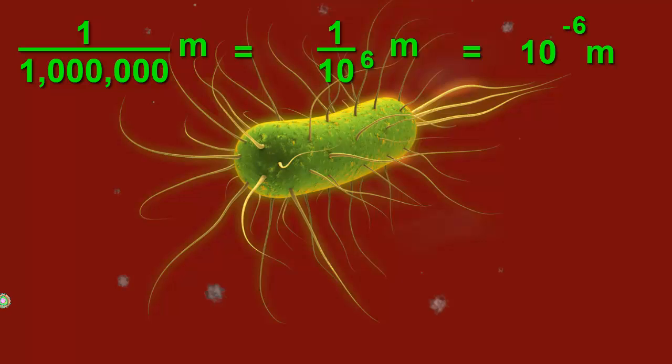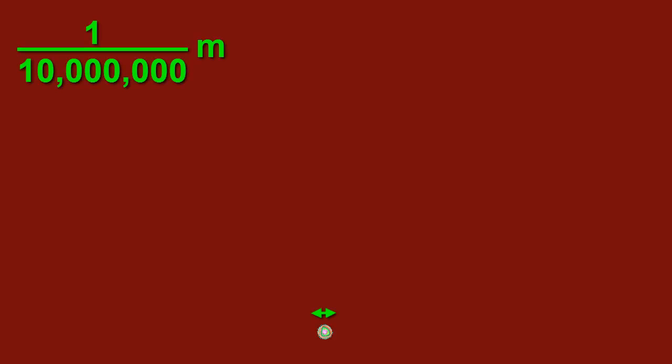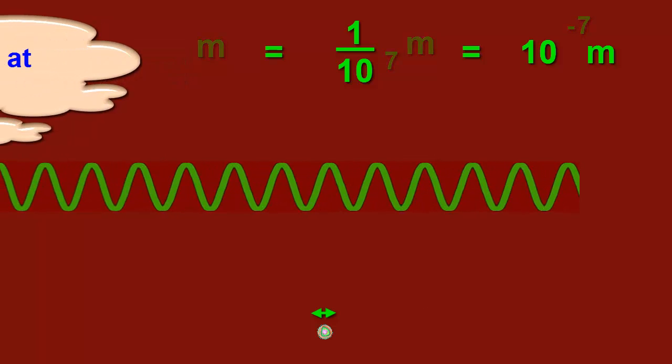Smaller again is a virus. Most viruses are too small to be seen with a normal microscope, so an electron microscope is needed. A flu virus is one ten millionth of a metre in size. That's seven zeros on the bottom. Ten to the negative seven. The wavelength of green light is about five times the width of this virus.